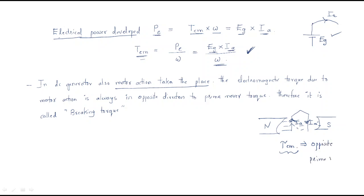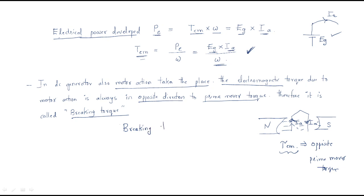The electromagnetic torque is opposite to the prime mover torque. By using the electric field and magnetic flux it generates this opposing torque. The electromagnetic torque due to motor action is always in the opposite direction to the prime mover torque. Therefore it is called the braking torque — it opposes and brakes the prime mover, and therefore it is called the braking torque.